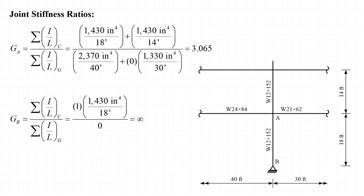Next we consider the stiffness ratio for joint B, the pin base of the column. We have one column framing into that joint but there aren't any beams or girders framing into the joint. One way to handle this is to account for the column stiffness in the numerator and use a value of zero in the denominator to account for the lack of rotational restraint at the pin support, which gives a theoretical stiffness ratio for joint B equal to infinity.